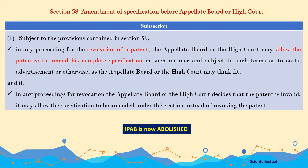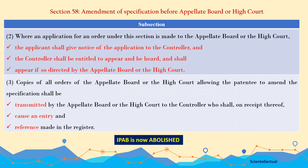Under the recent rule amendment, IPAB is now abolished. Section 58, Subsection 2: Where an application for an order under this section is made to the Appellate Board or the High Court, the applicant shall give notice of the application to the Controller, and the Controller shall be entitled to appear and be heard, and shall appear if directed by the Appellate Board or the High Court. Subsection 3: Copies of all orders of the Appellate Board or High Court allowing the patentee to amend the specification shall be transmitted to the Controller, and it will cause an entry and reference to be made in the register.